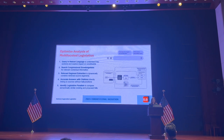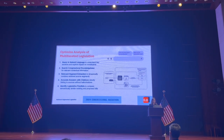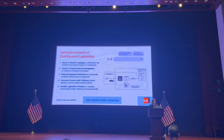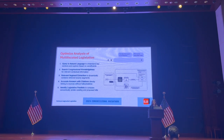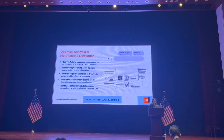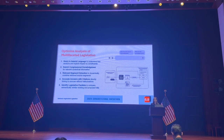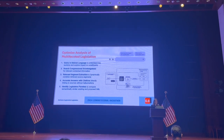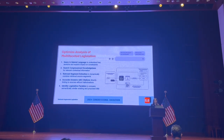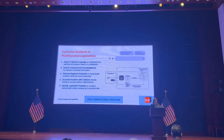Beginning with a simple natural language query, users can use the app to understand key sections and explore impact. The tool would ingest data from CAO databases, the congress.gov API, and other sources, continuously fed through a constantly updated knowledge base to create a vector database of all relevant congressional data.